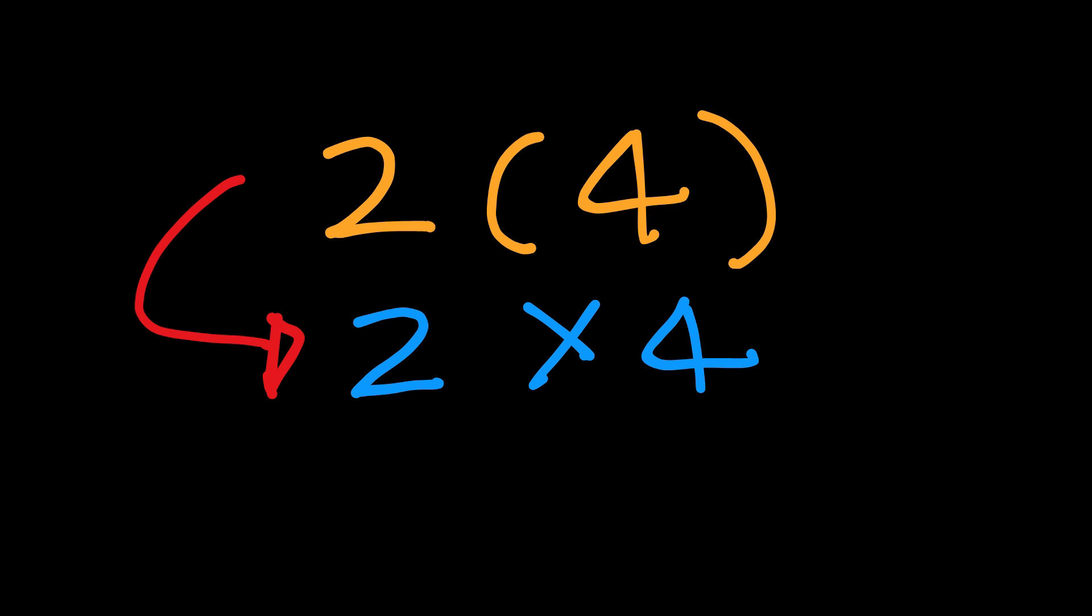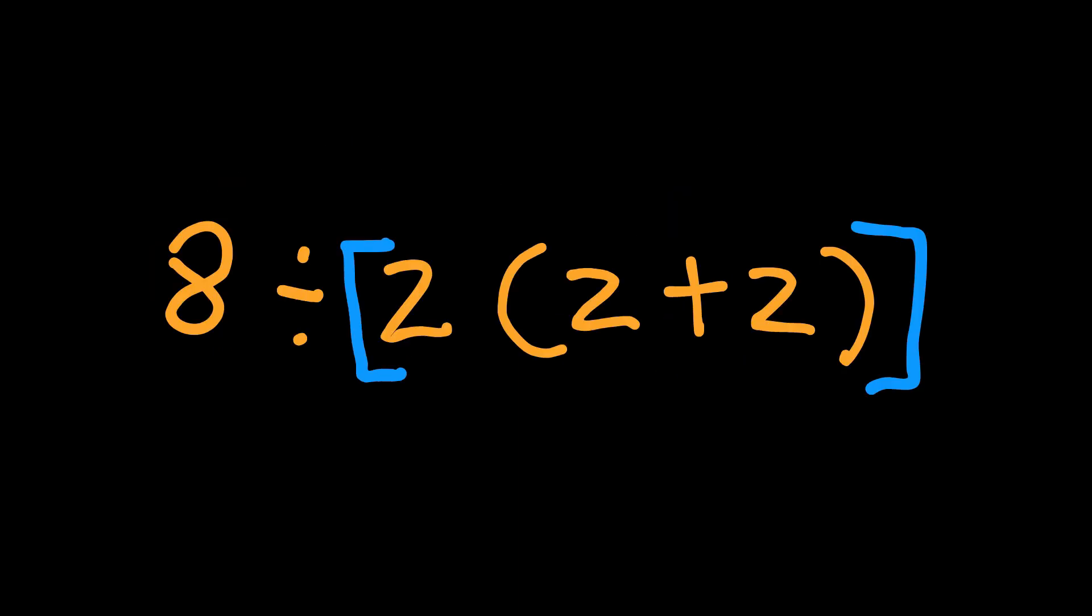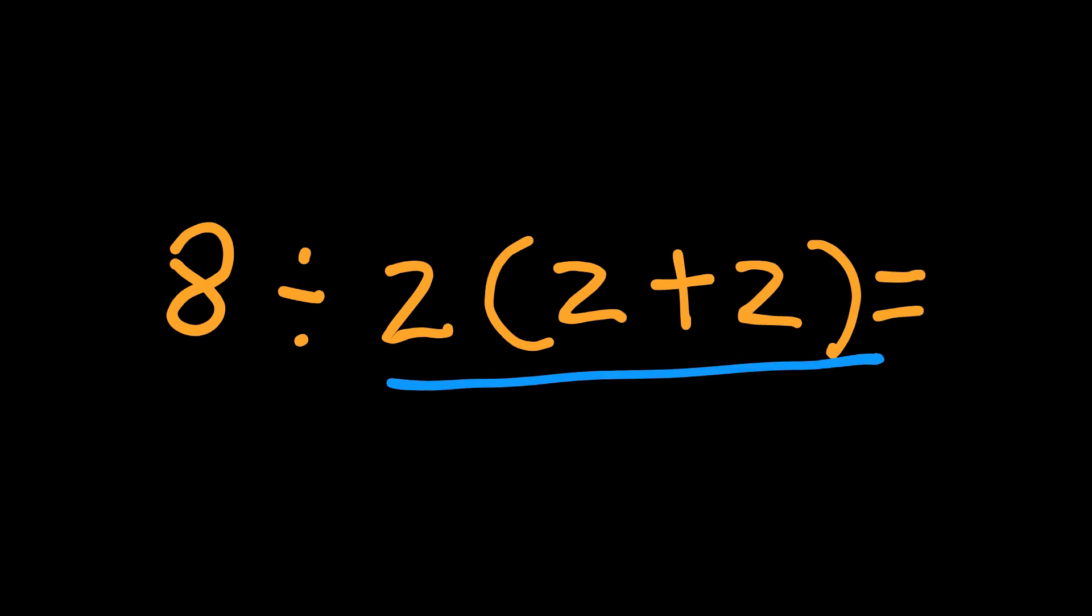Mathematically, once you replace the parenthesis, it's just 2 times 4. Not a grouped expression. If it was meant to be grouped, the original question would have been written like this. 8 divided brackets 2 parenthesis 2 plus 2 parenthesis brackets. See the difference? That would clearly mean divide 8 by the entire quantity 2 parenthesis 2 plus 2. And then, yes, the answer would be 1.